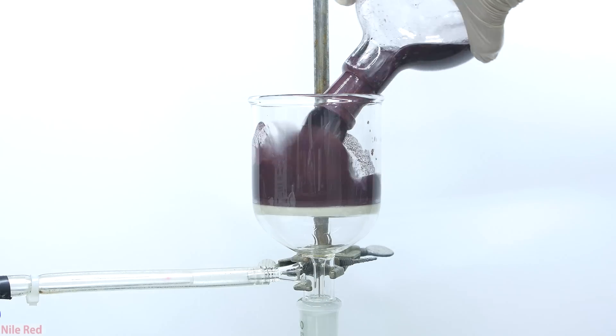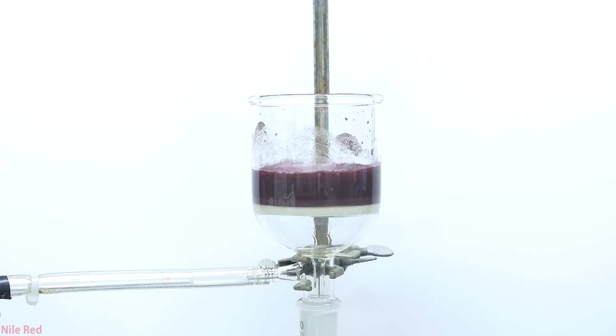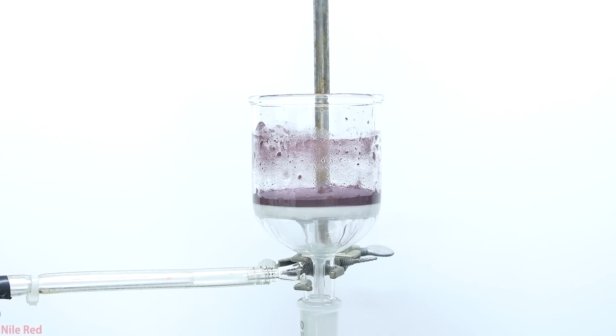To completely clean out the flask and remove all of the red phosphorus, I simply just do a few water washings. Once all of the red phosphorus has been added to the filter, I pull a vacuum and try to get rid of as much of the liquid as possible.